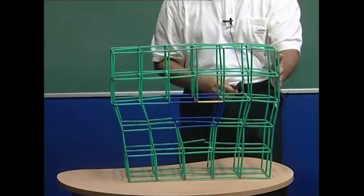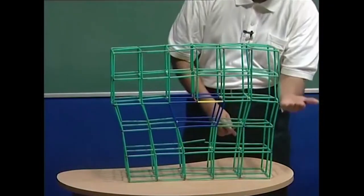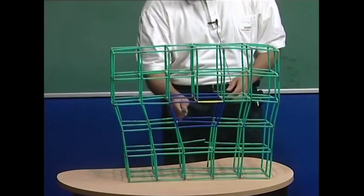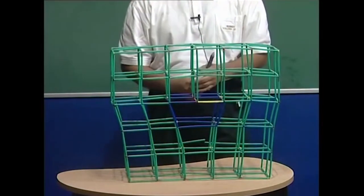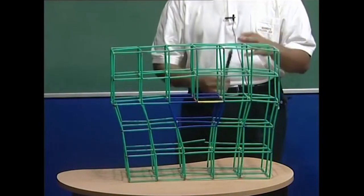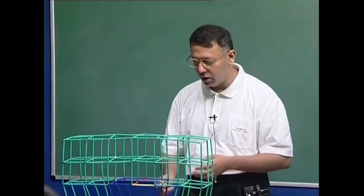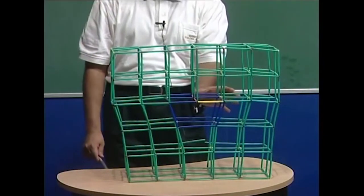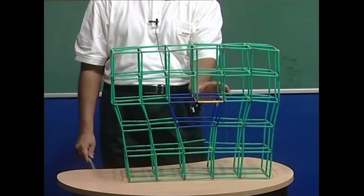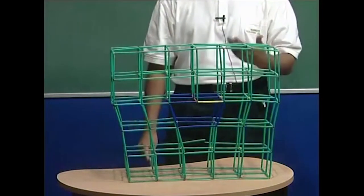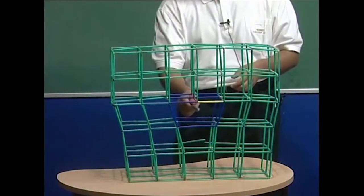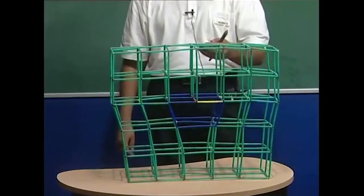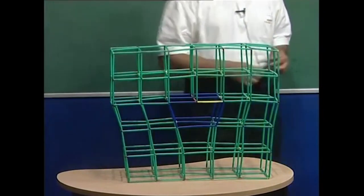If the dislocation approaches a free surface, this extra half-plane would come out and create a step on the free surface as we shall see with some graphics later on. The core of the dislocation — technically the region where linear elasticity theory breaks down because the deformations are so large — is associated with some free volume. Typically the core is a region of the order of a few Burgers vectors. This free volume, as we shall see later, is very important in certain phenomena.